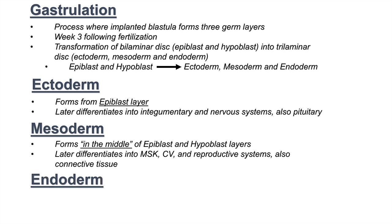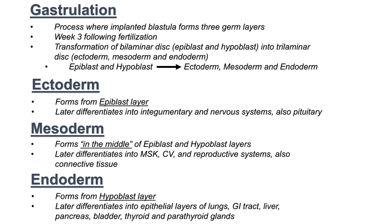And the third germ layer is the endoderm. The endoderm is the inner, or internal, layer. It forms from the hypoblast layer, and it will later differentiate into the epithelial layers of the lungs, GI tract, the liver, pancreas, bladder, thyroid, and parathyroid glands. So it will comprise much of the internal viscera of an organism.